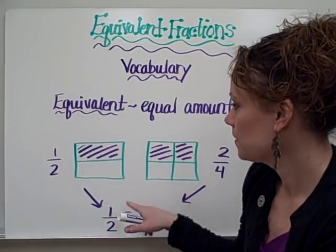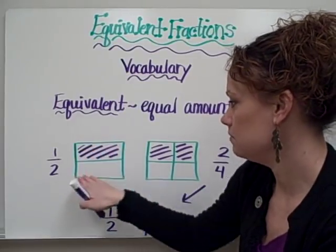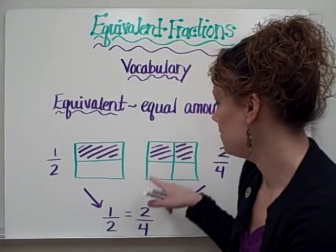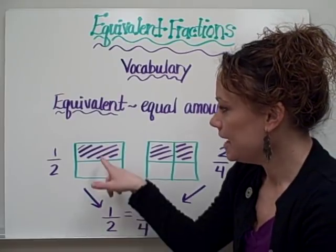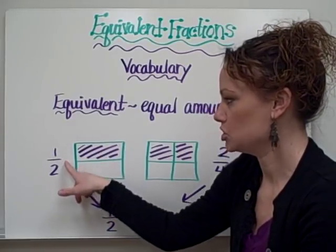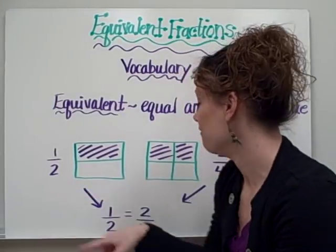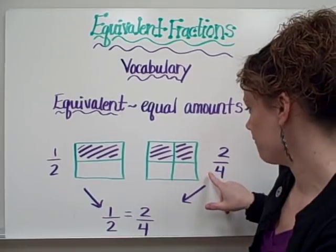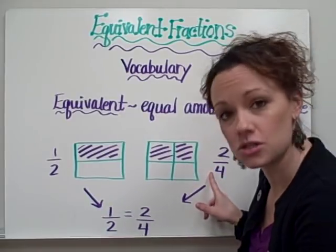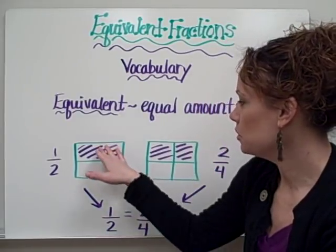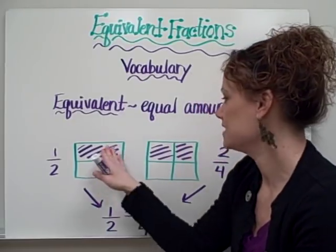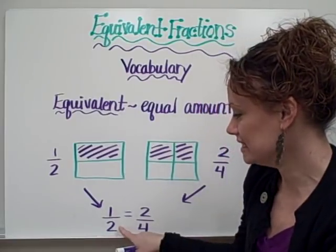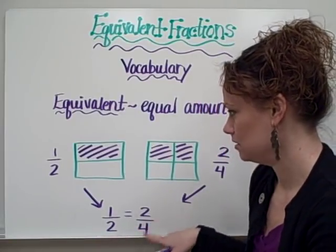So take a look at this example below. We have two rectangles which seem to appear to be about the same size. We've divided this rectangle into two pieces, and we've divided this rectangle into four pieces. Here I have one part out of two parts shaded. So the part shaded for this rectangle is one half. Over here I have two parts shaded. So we have two parts out of four parts shaded over here, or two fourths. If you look very carefully you can clearly see that both rectangles have the same amount or same value shaded. So we can say that one half is equal to two fourths.